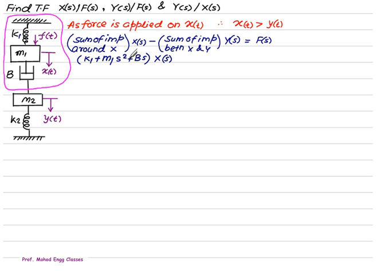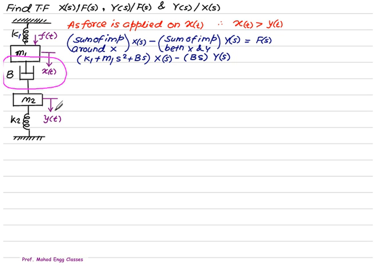We must consider all elements around x: the impedance of k1 is k1, the impedance of m1 is m1s², and the impedance of b is bs, all multiplied by x(s). When considering the sum of impedances between x and y, there is only one element — the damper b — which is between x and y. Note that m1 and m2 each require only one displacement, so they are not between x and y, but damper b requires two displacements, x and y, making b the common element. So the impedance of b is bs, and the equation equals f(s).